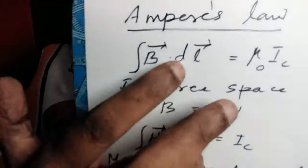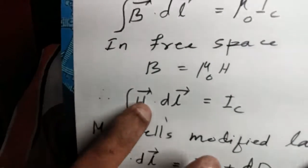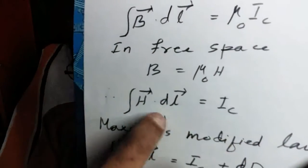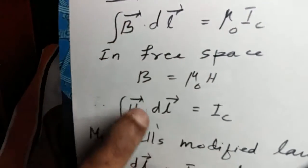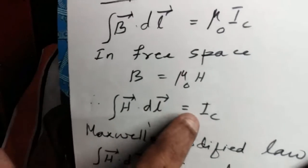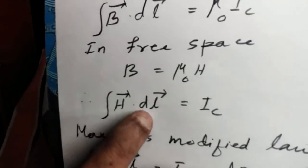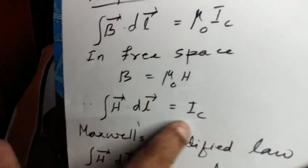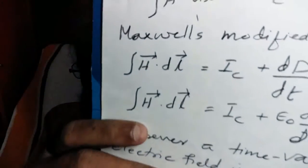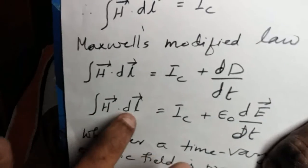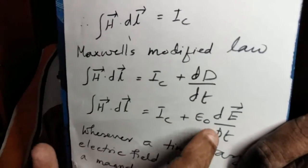Substituting B equals mu zero H into Ampere's law, Ampere's law takes the form: integral of H dot dL equals IC. This is the original form of Ampere's law for conduction current. Maxwell introduced the concept of displacement current and modified Ampere's law to the form: integral of H dot dL equals IC plus I displacement.